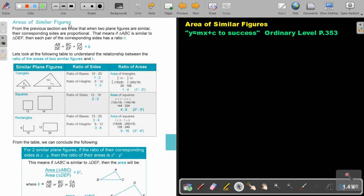Areas of similar figures. From the previous section, we know that when two plane figures are similar, their corresponding sides are proportional. That means if triangle ABC is similar to triangle DEF, then each pair of the corresponding sides has a ratio K. So as soon as I write the sides, the corresponding sides, and I do that division, that ratio will always be just K. So let's look at the following table to understand the relationship between the ratio of the areas of two similar figures and K.